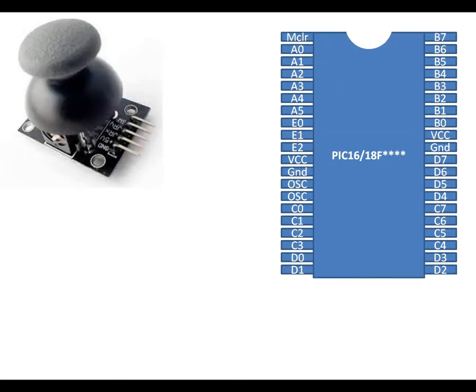Now we have this cheap joystick module — you can buy it from anywhere online or from any electronics shop. It has five pins. If you hold it, the bottom pin is ground, the top one above that is 5 volt, then we have the X-axis ADC pin, then the Y-axis ADC pin, and then a normal push button.